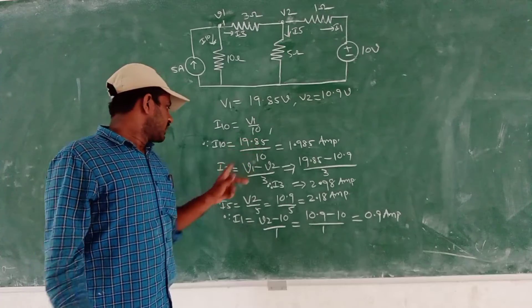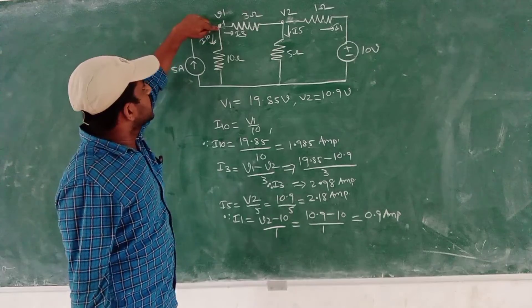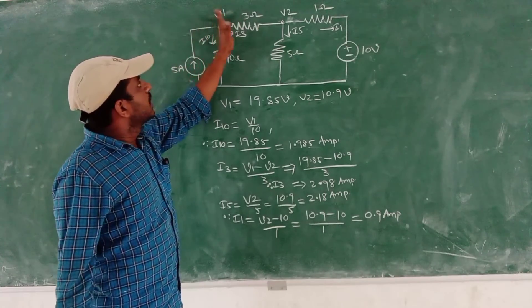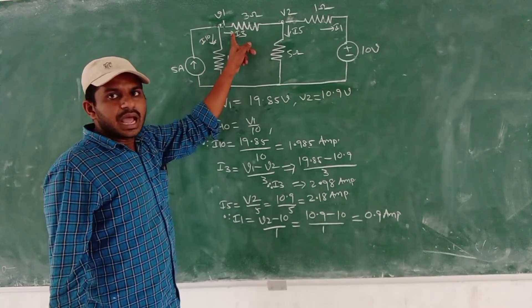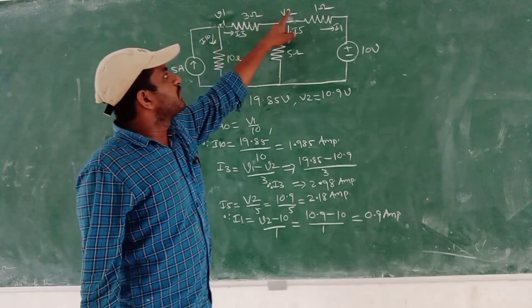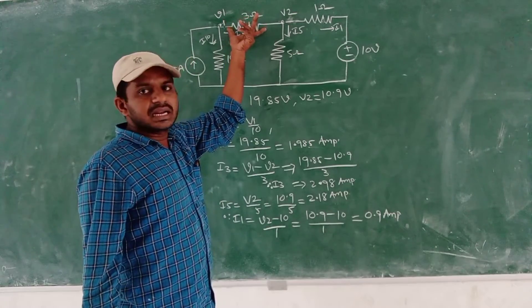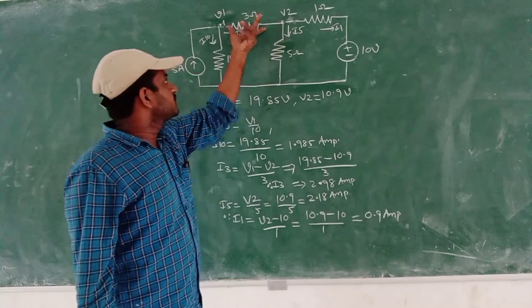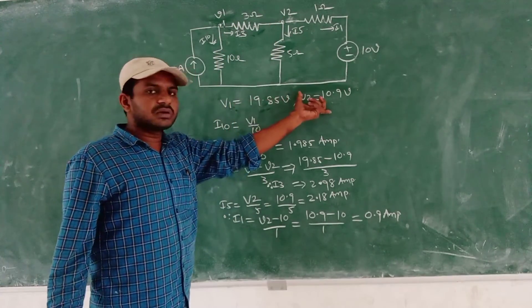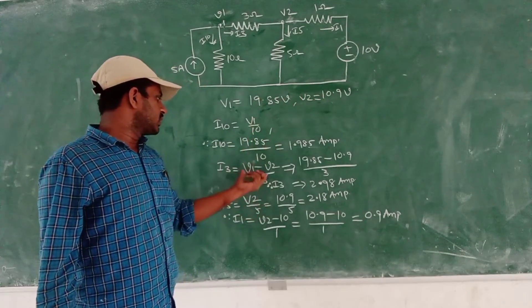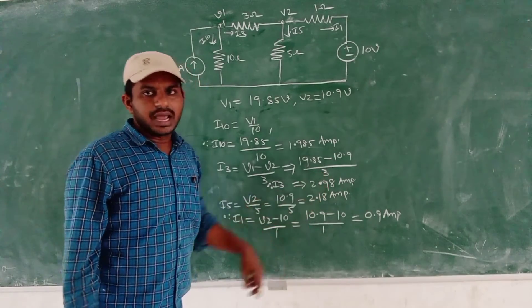If you want to go further, I3 here — from this junction, some I3 current is flowing, and also I10 is flowing downward. If you want to calculate I3, it is equal to V1 minus V2 by 3, because across the resistance we have to calculate the total voltage drop. So V1 minus V2 by 3, with V1 and V2 already known, gives us finally 2.98 amperes.